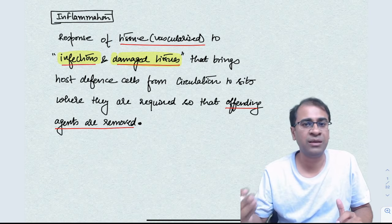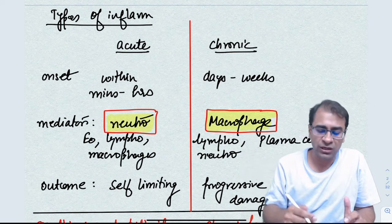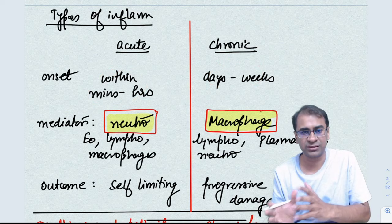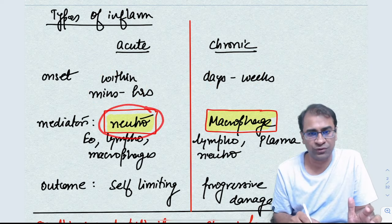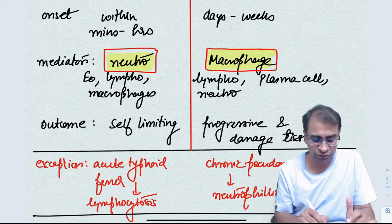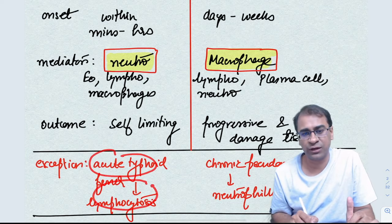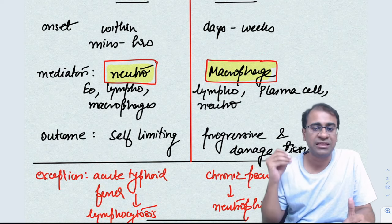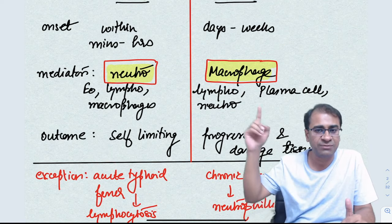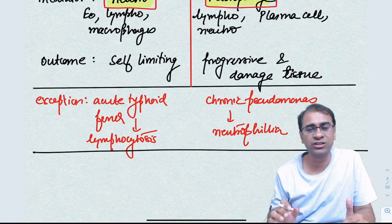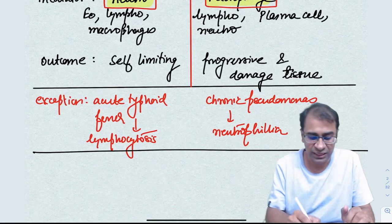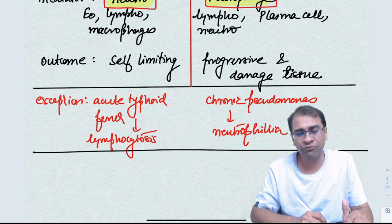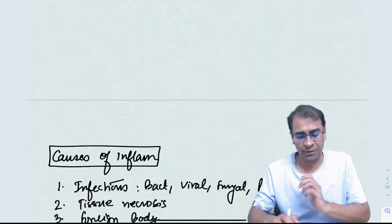Two types: acute and chronic. Acute starts within minutes and chronic starts in days to weeks. The main cell here is neutrophils, but remember an exception in the case of acute typhoid fever which has lymphocytosis. Similarly, the macrophage is the main mediator in chronic inflammation. Remember the main mediator here is macrophage, however in chronic pseudomonas infection it is neutrophilia which often happens. Acute is a self-limiting condition while chronic is progressive and often leads to tissue damage.